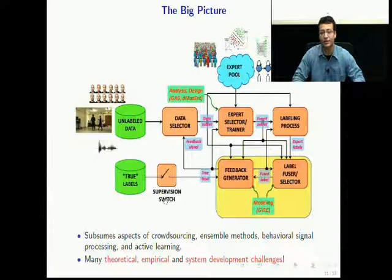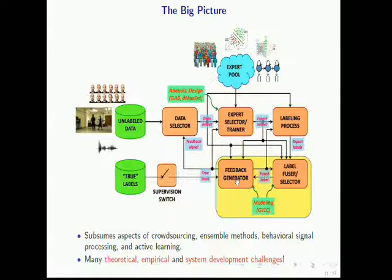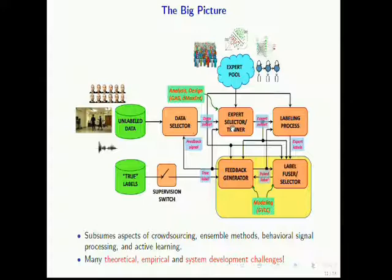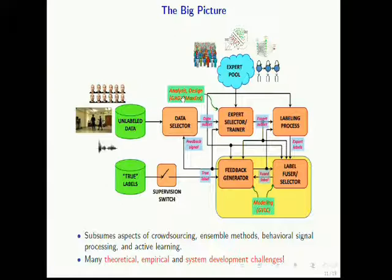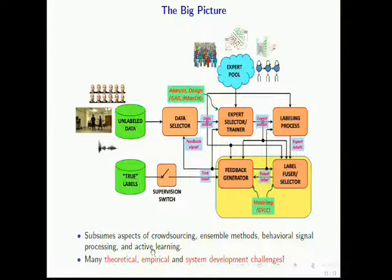Now we can go back to our big picture and start filling in individual blocks of the black box. The GVLC model fits into two sub-blocks: feedback generated about reliability of experts and a scheme for fusing labels from multiple experts. The other parts of my thesis correspond to the other sub-blocks, where we are asking how we can analyze the diversity of an ensemble of experts and how we can design diverse experts themselves. My thesis touches on many aspects of crowdsourcing, ensemble methods, behavioral signal processing, and active learning, with several theoretical, empirical, and system development challenges. These are some representative publications for my thesis.